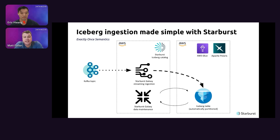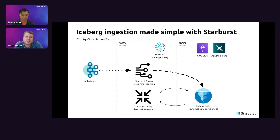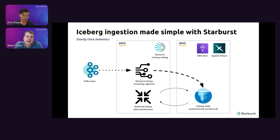Within Starburst Galaxy, you connect to the Kafka topic and we continuously read from that topic, landing data into an associated Iceberg table we've created for you. That Iceberg table lives in your S3 bucket. We do this with exactly-once semantics — no missing messages and no duplicate reads. We also do this in near real time: from the moment we read a message to when it's available for querying is about one to two minutes. We also have a background data maintenance service running to compact and optimize the data.